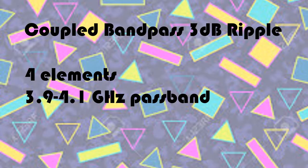Finally, Kayla will give us the low-down on the coupled-line bandpass filter. The third filter we designed was a 3 dB ripple coupled bandpass filter. The filter was designed with four elements and a bandpass from 3.9 GHz to 4.1 GHz, with a center frequency at 4 GHz. It had an attenuation of 30 dB at 4.3 GHz.